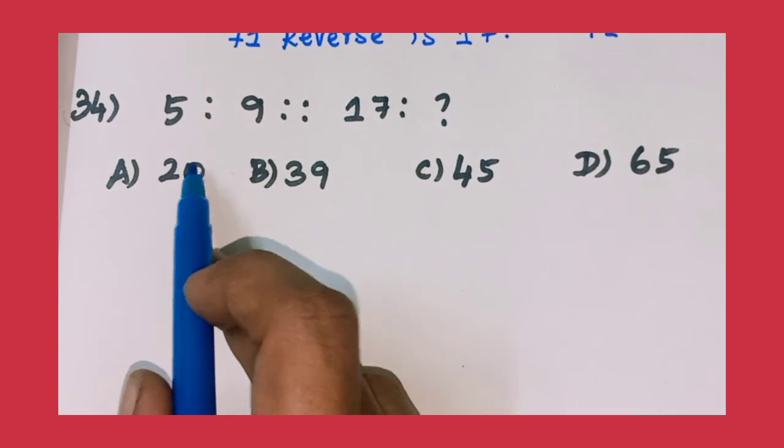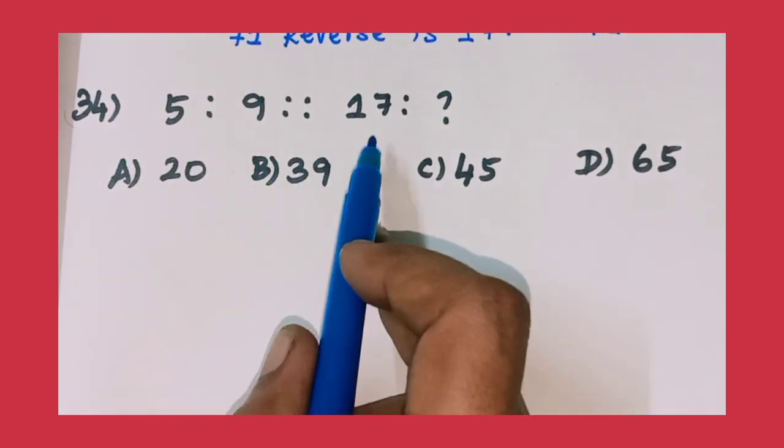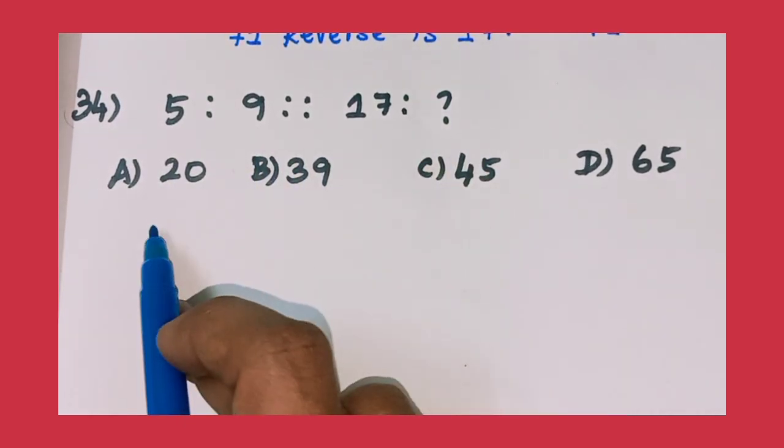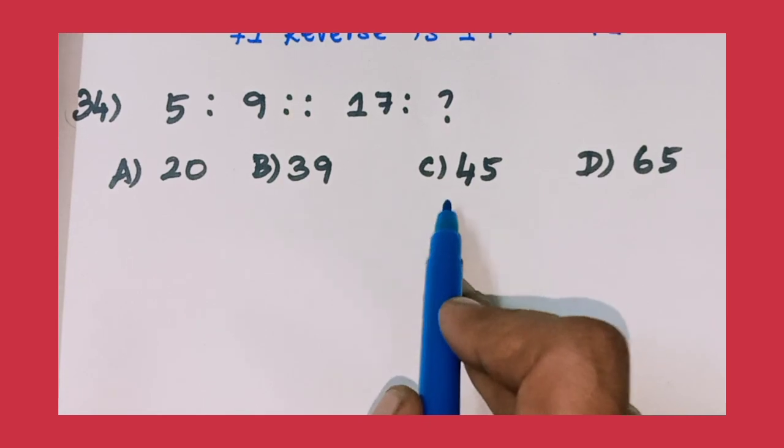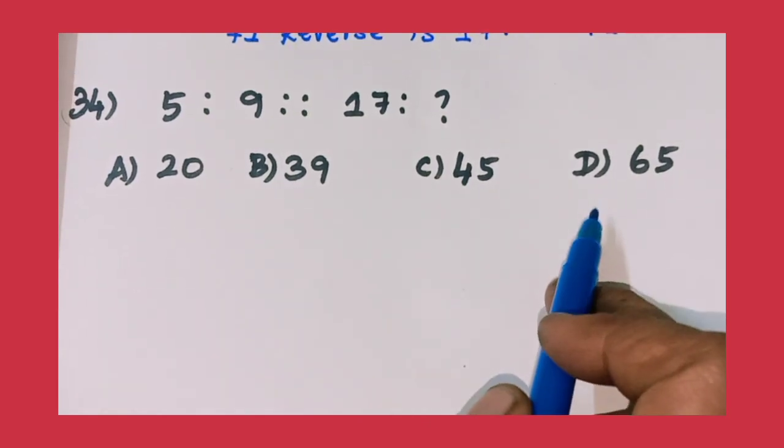34th Question: 5 ratio 9 proportion 17 ratio question mark. Option A 20, Option B 39, Option C 45, and Option D 65.